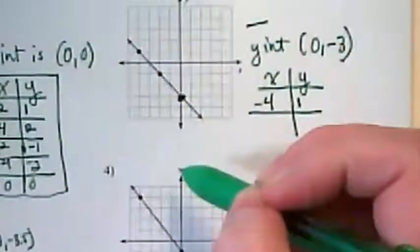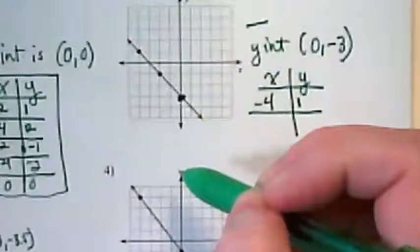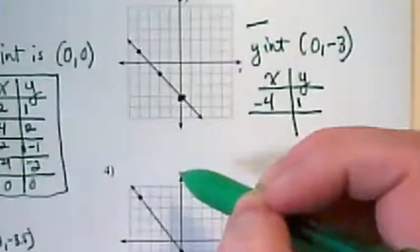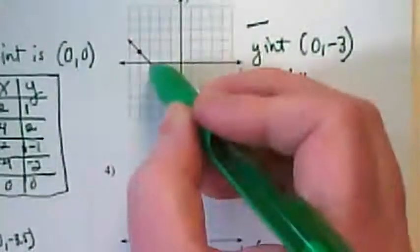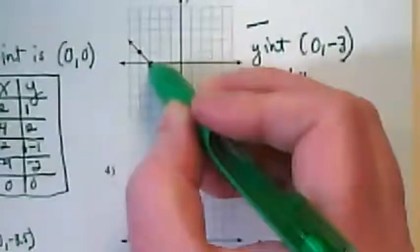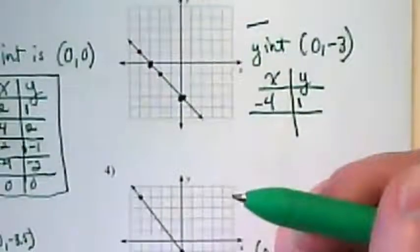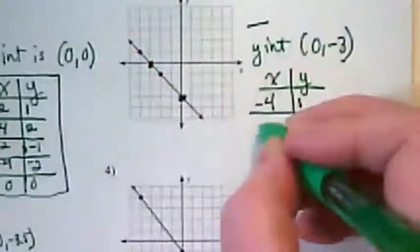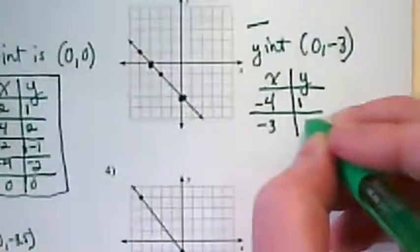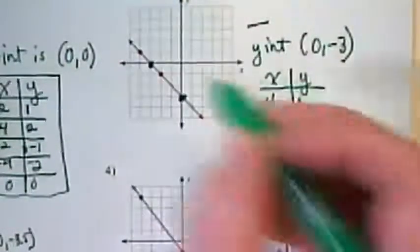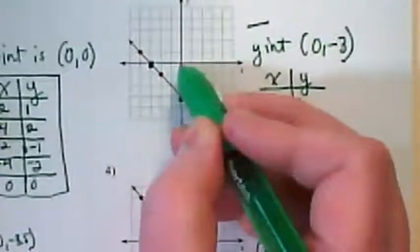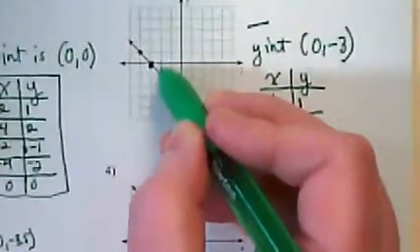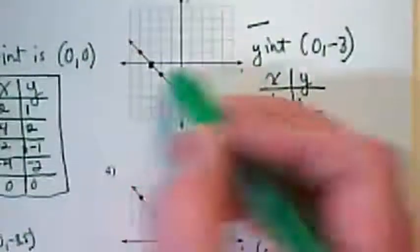Where do you see another point? I see one right here. That one would be (-3,0). Then there's this one that was marked for us. (-2,-1).